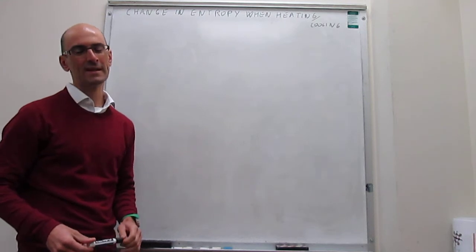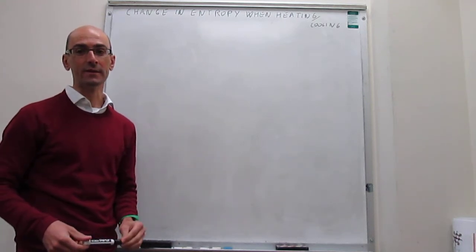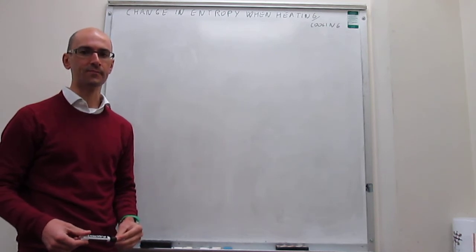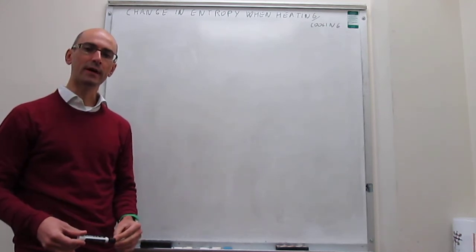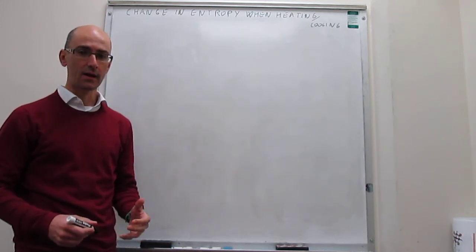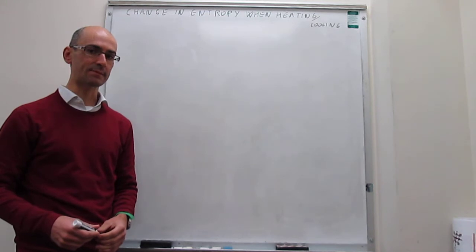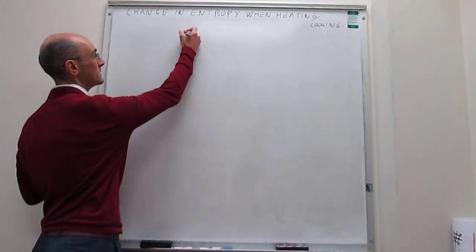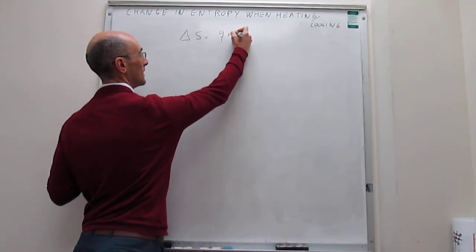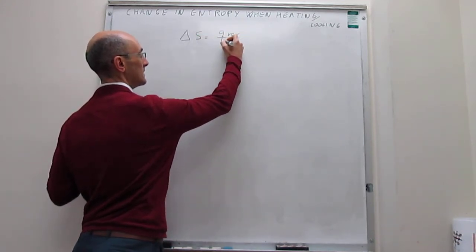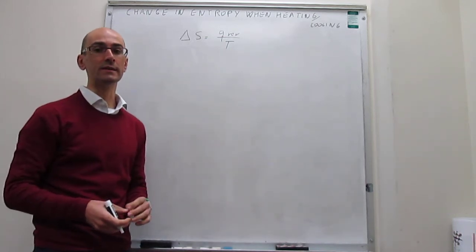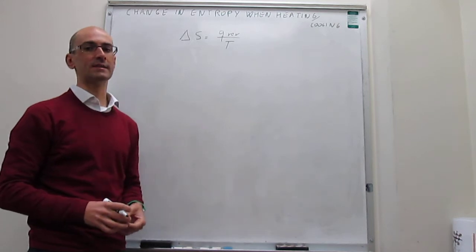In this video, we discuss how to calculate the change in entropy in a system when heating or cooling that system. In prior videos we have established the definition of the change in entropy in a system, and we've done so for a gas expansion. What we have come up with is that the change in entropy in that system is simply equal to the reversible heat divided over temperature, and we have used this to calculate what the change in entropy is in a gas expansion.